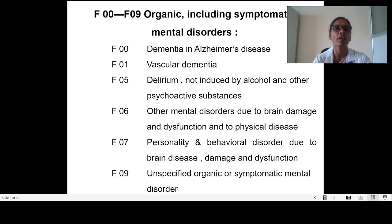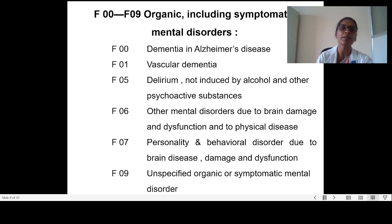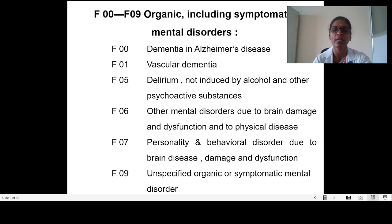The first ICD-10 classification is F00 to F09: Organic, including symptomatic, mental disorders. This includes F00 dementia in Alzheimer's disease, F01 vascular dementia, F05 delirium not induced by alcohol and other psychoactive substances, F06 other mental disorders due to brain damage and dysfunction and to physical disease, and F09 unspecified organic and symptomatic mental disorder.